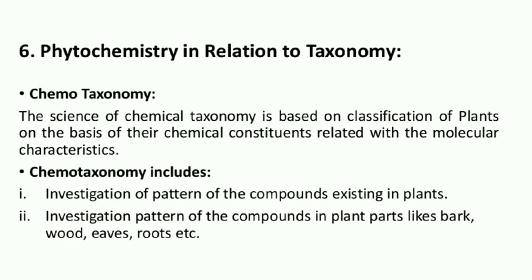Phytochemistry — that is the chemicals present in the plant: phyto means plant, chemistry means chemicals. Hence it is called chemotaxonomy. The science of chemical taxonomy or chemotaxonomy is based on classification of plants on the basis of their chemical constituents related with molecular characteristics — means whatever chemicals are present will help in identifying the plant species. Chemotaxonomy includes two aspects. First, investigation of pattern of compounds existing in the plant — means what pattern of carbohydrate, protein, lipid, nucleic acids (RNA, DNA) are there. The pattern of chemicals will help in the identification of the species.